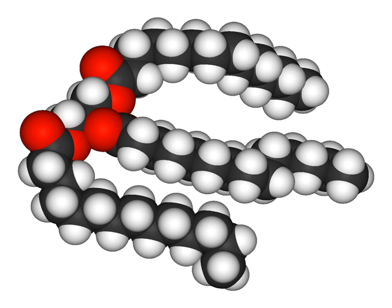The nomenclature is based on the non-acid end of the chain. This end is called the omega-end or the N-end. Thus alpha-linolenic acid is called an omega-3 fatty acid because the third carbon from that end is the first double bonded carbon in the chain counting from that end.